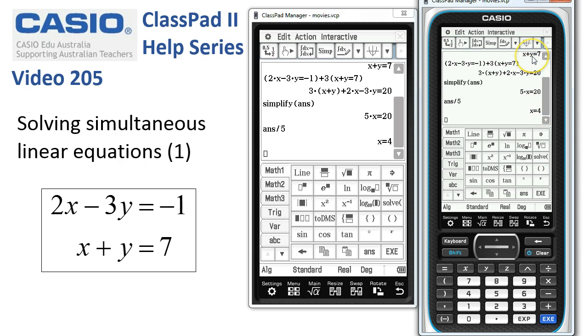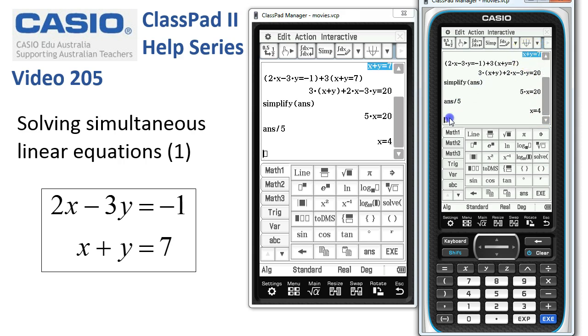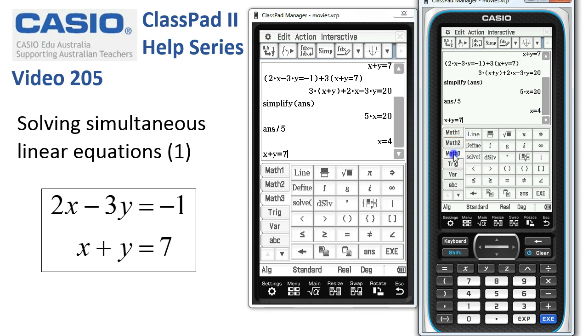To determine y, I'm going to come up here, choose the x + y = 7 equation, drop it down here, head to the Math 3 template, tap on 'given' and substitute in the fact that x = 4. I just copied that down to this line and tap execute.